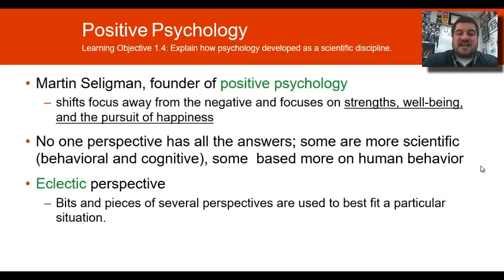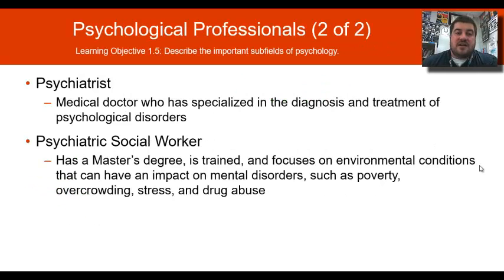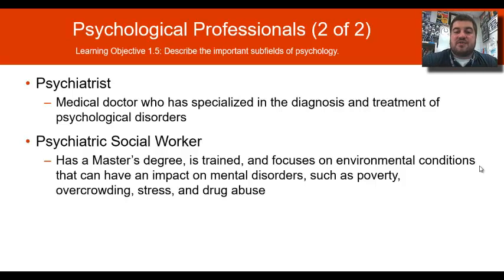In the subfields of psychology, a psychologist has a doctorate degree and undergoes academic training. A psychiatrist is a medical doctor who specializes in the diagnosis and treatment of psychological disorders and can prescribe medication. A psychiatric social worker has a master's degree and understands the impact of mental disorders and environmental conditions like poverty, overcrowding, stress, and drug abuse on an individual.